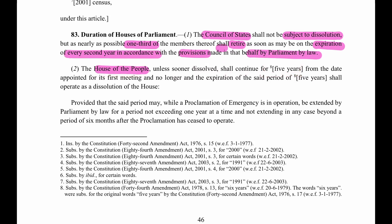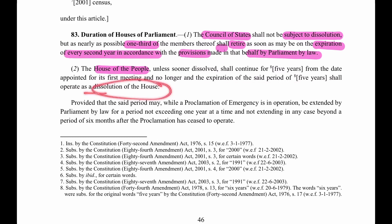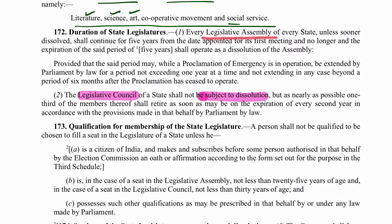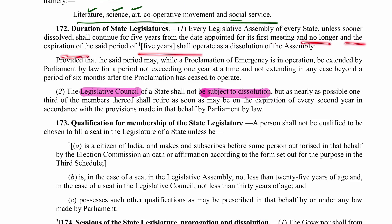Five years is the fixed term given in normal situations, from the date appointed for its first meeting. It shall continue no longer than that. The expiration of the said period of five years shall operate as dissolution of the house. Similarly, every Legislative Assembly of the state, unless sooner dissolved, shall continue for five years from the date appointed for the first meeting, and the expiration will be called as the dissolution.